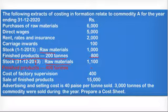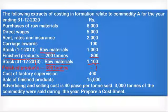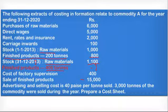The closing stock of raw material is Rs. 1,100. In case of finished product, the closing stock quantity is 400 tons, but its price is not given — that is the key problem we need to solve. The cost of factory supervision is Rs. 400. Total sales of finished product is Rs. 15,000. Advertising and selling cost is Rs. 40 per tonne sold, and during the year 3,000 tons of the commodity were sold. We are asked to prepare a cost sheet.